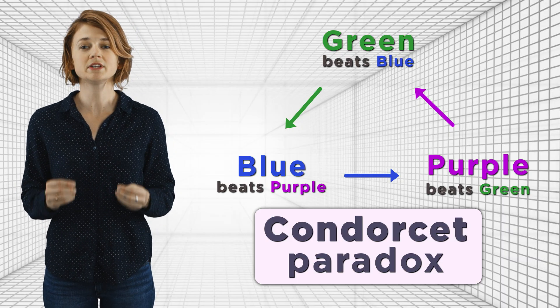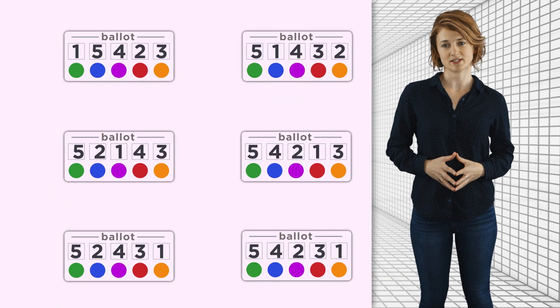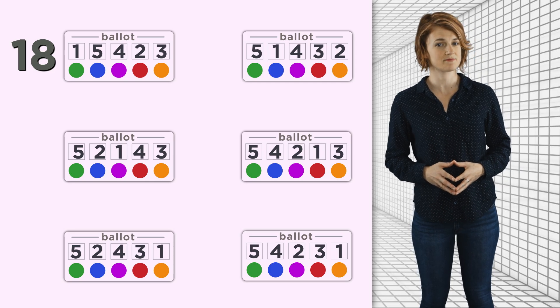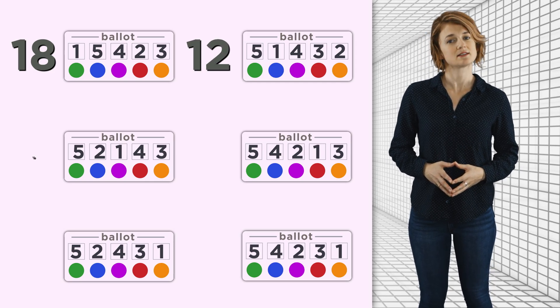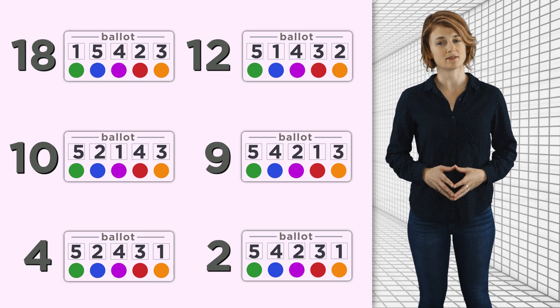This method of comparing each pair of candidates failed. We'll need a voting system that compares all the candidates at once. To review four common election decision methods, we'll expand our sample election to include five colors: green, blue, purple, red, and orange. We have 55 ballots with the complete ranked preferences of each voter. For example, 18 people ranked green first, red second, orange third, purple fourth, and blue last. 12 people filled out their ballots one way, 10 another way, 9 another, 4 another, and 2 people filled out their ballots one final way.